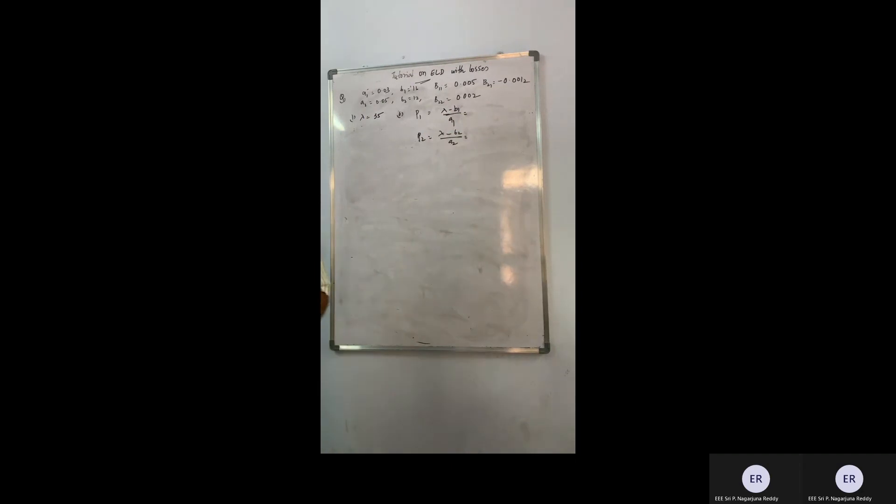So what are the values of these things? Now let's calculate the values of these things. Lambda I have chosen it as 35 and this is 16 by 0.03. So now let's calculate the value.